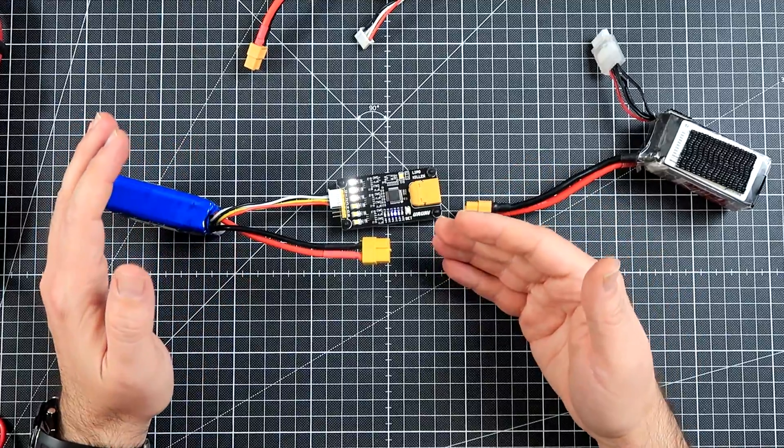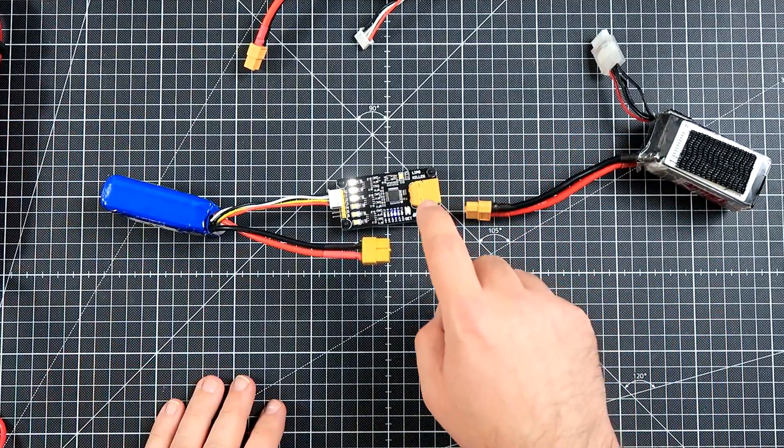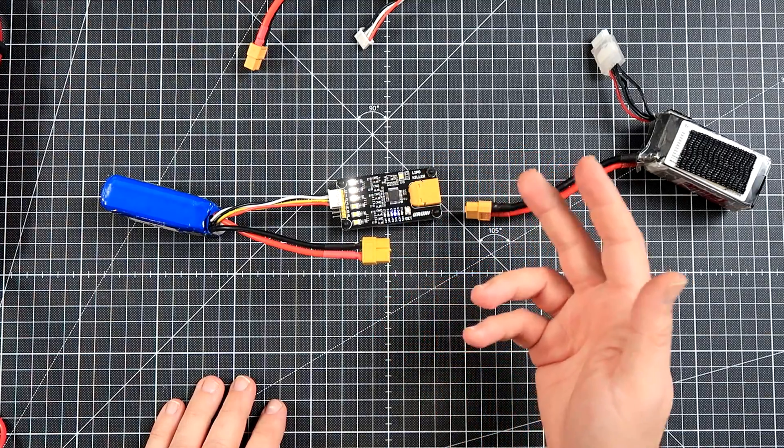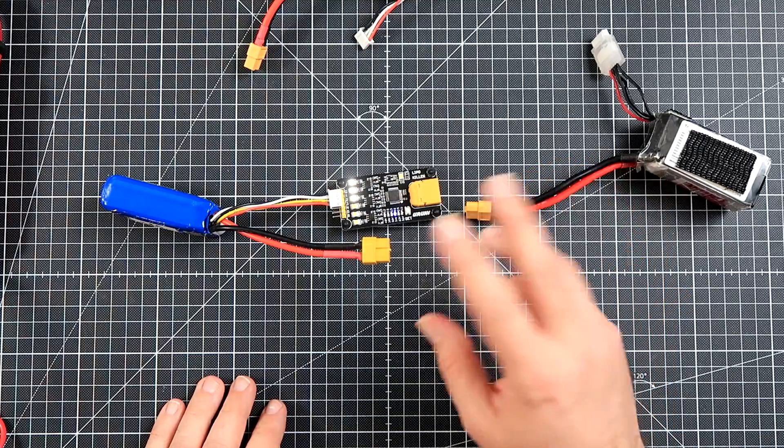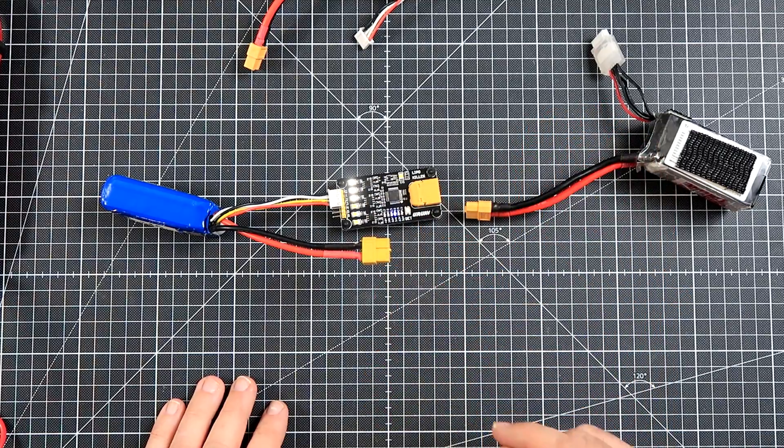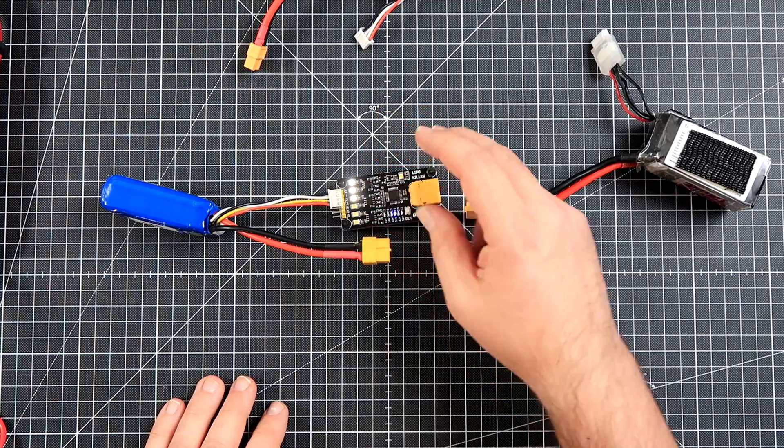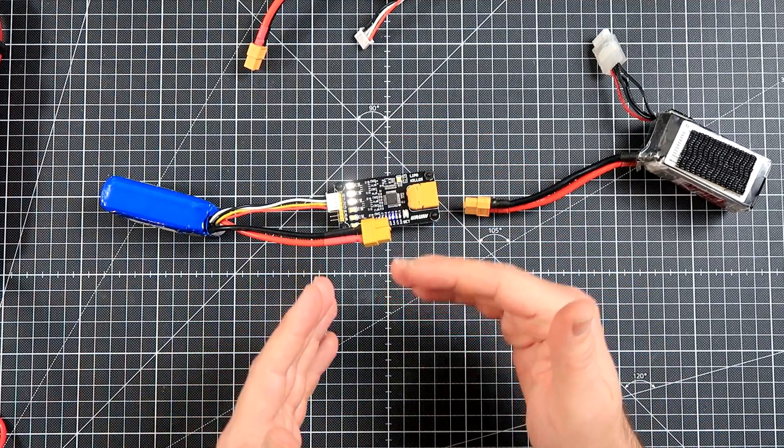The CPU—an STM32F1, exactly the same that you can find in Naze32 or CC3D flight controllers—will monitor the voltage and switch the MOSFETs and resistors on and off to discharge each of the cells to the specified voltage.